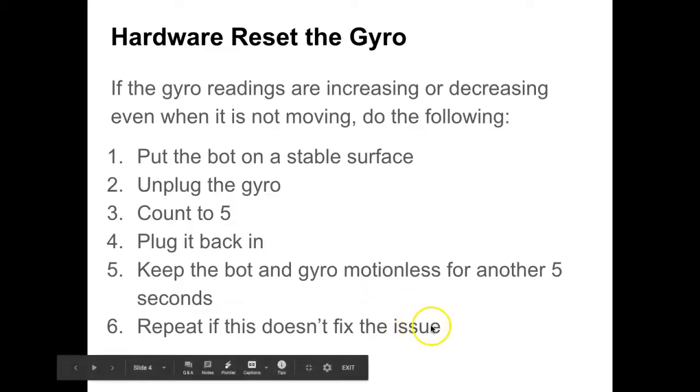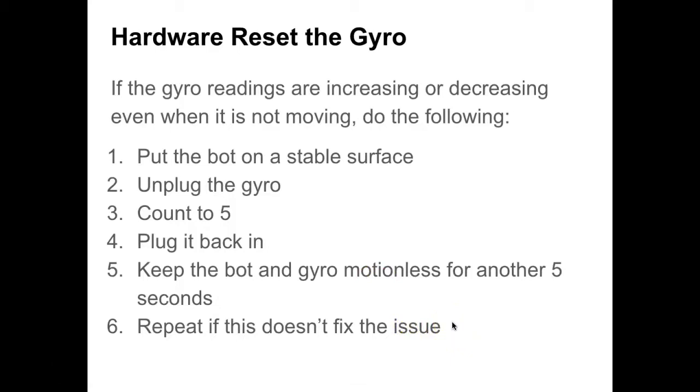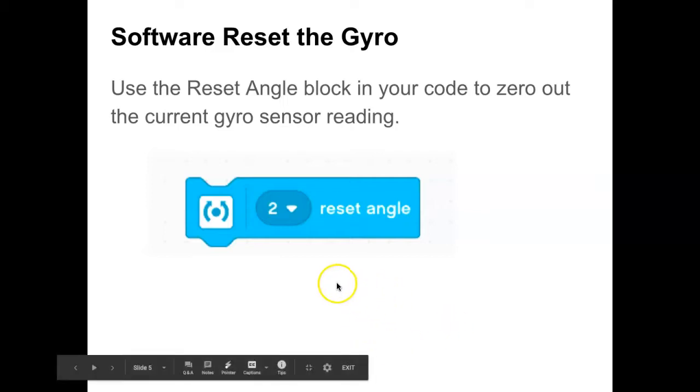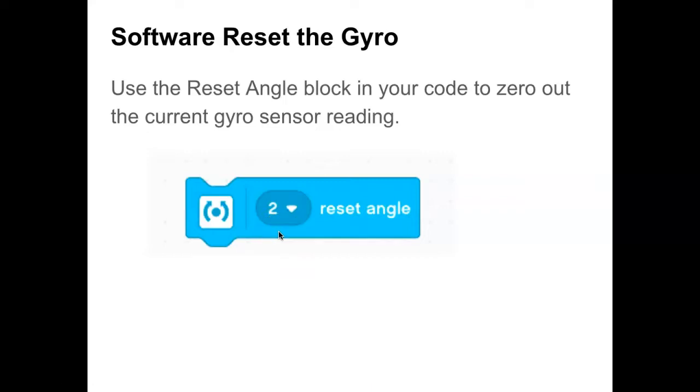If it really gets bad, you can restart the robot. I have never had any student or myself have an issue with a gyro sensor that wasn't solved by that, or maybe it was a code problem. I also recommend a software reset almost any time you want the gyro to turn. By software reset, we're resetting the angle. To do that, you'll use the reset angle block in your code to zero it out to a zero value.